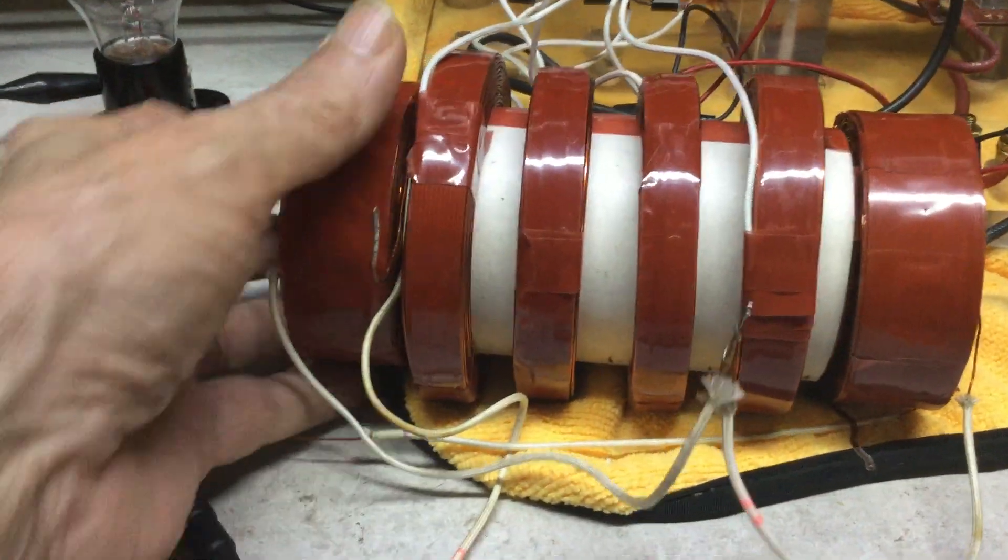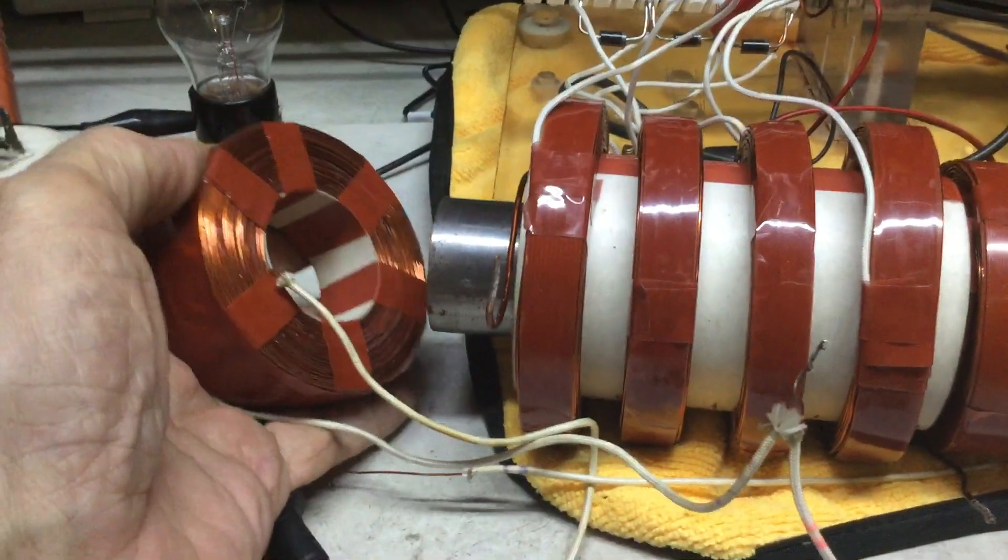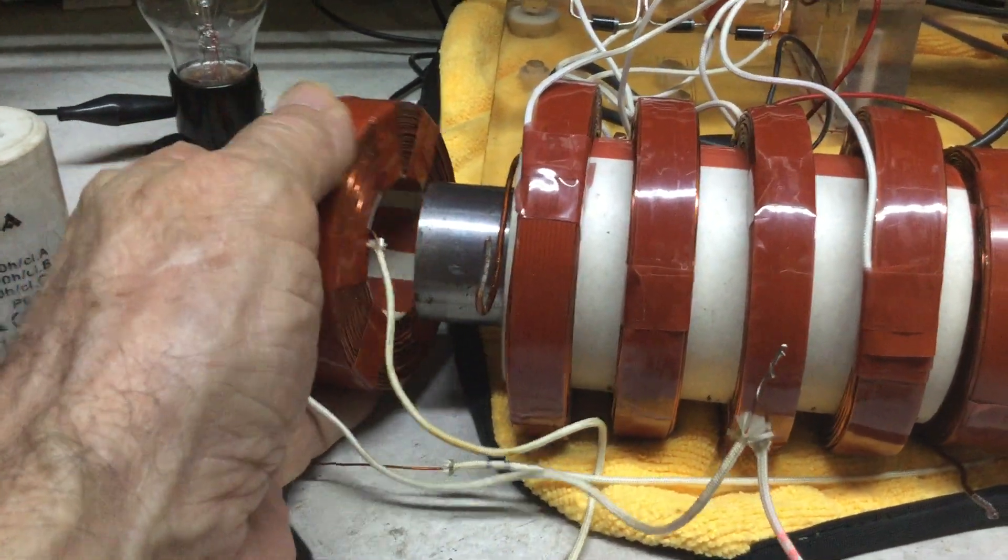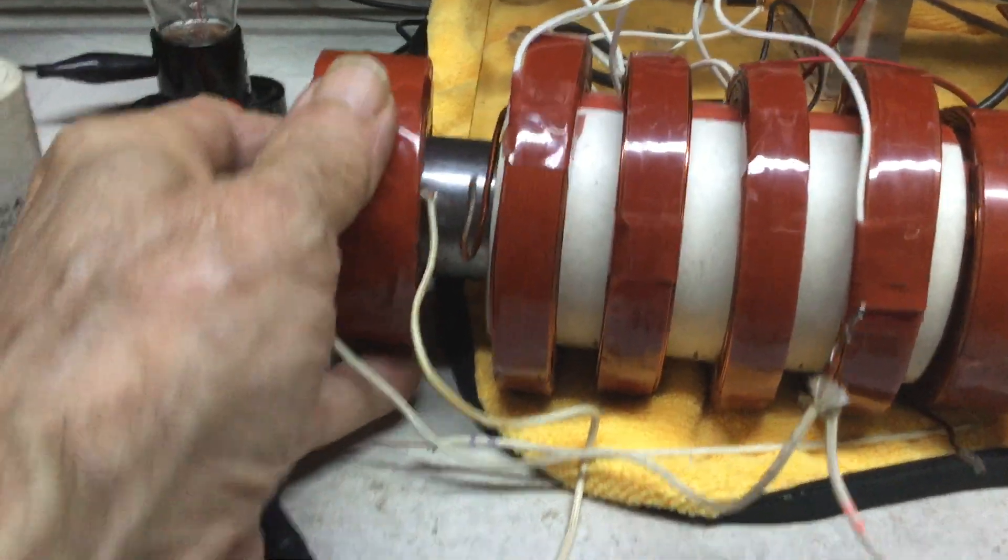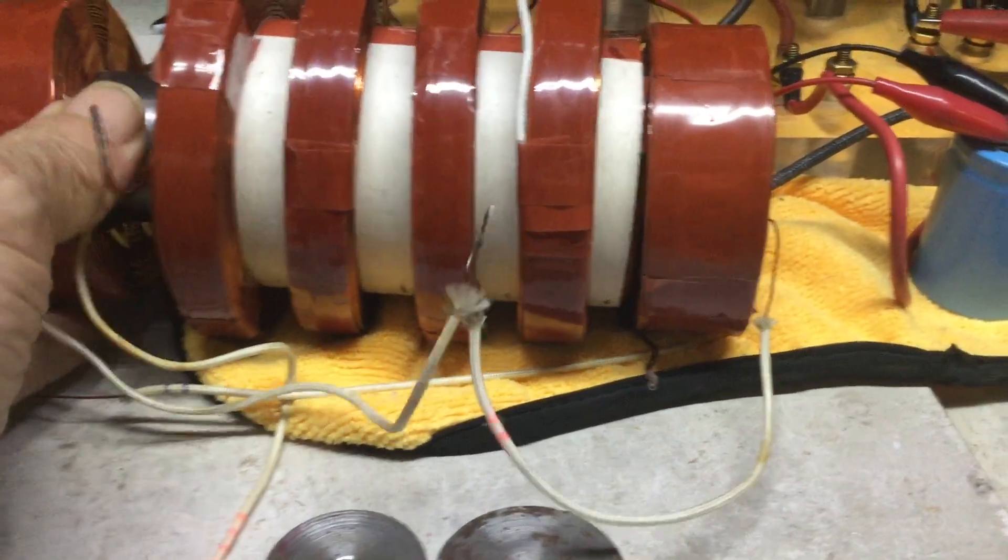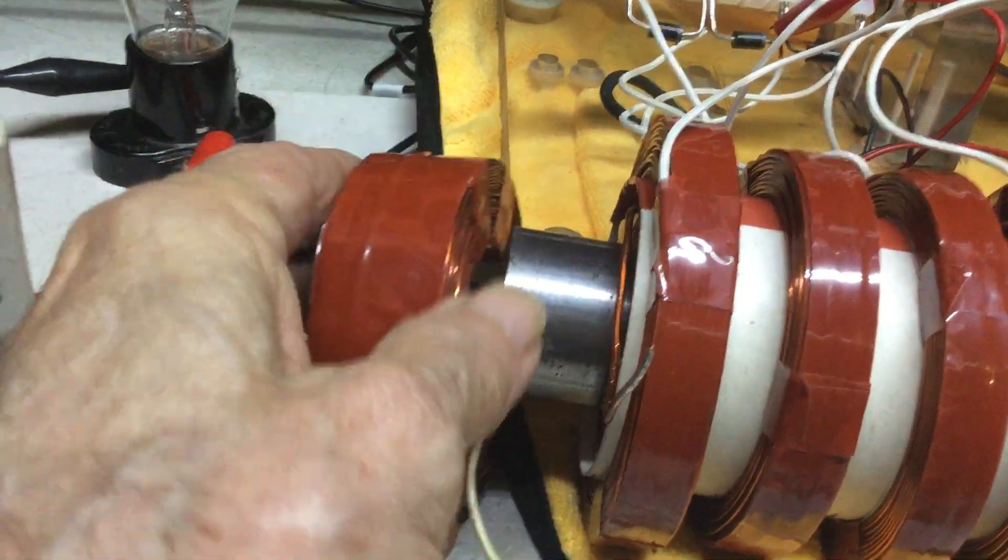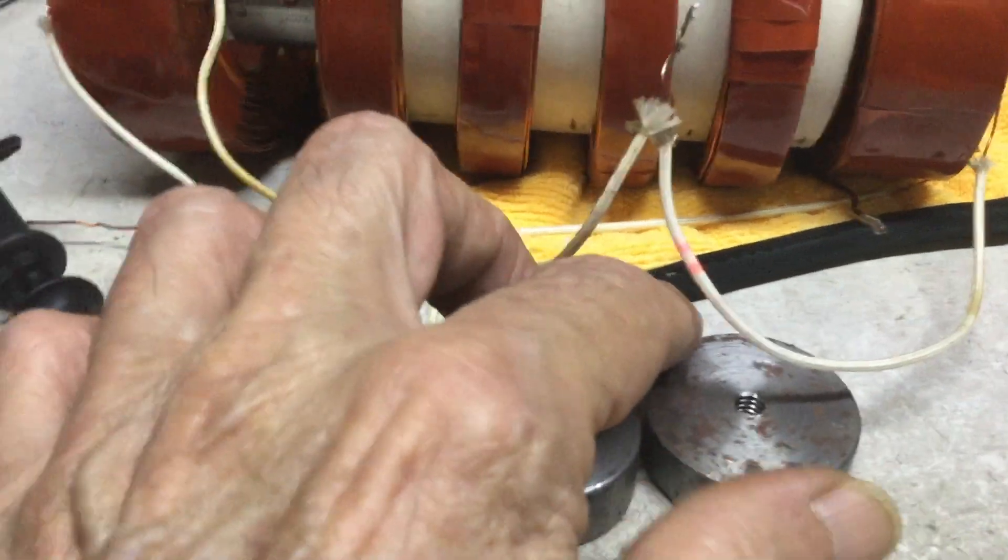Now these coils have a lot of turns, and it's only 23 gauge wire, very thin as you can see. They are mounted on a thicker core than the center one - an inch and a half versus an inch and a quarter.